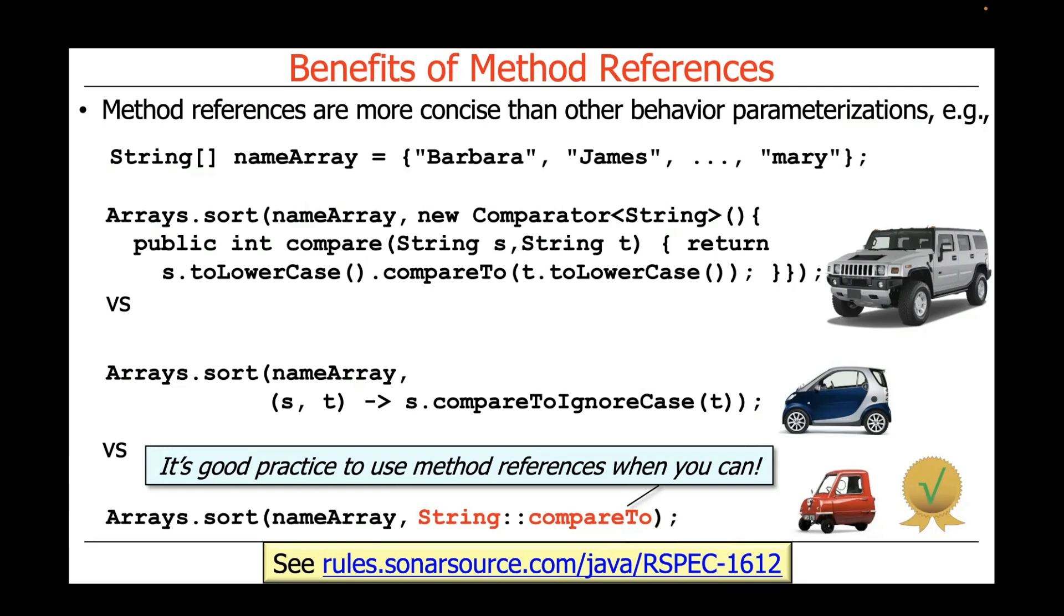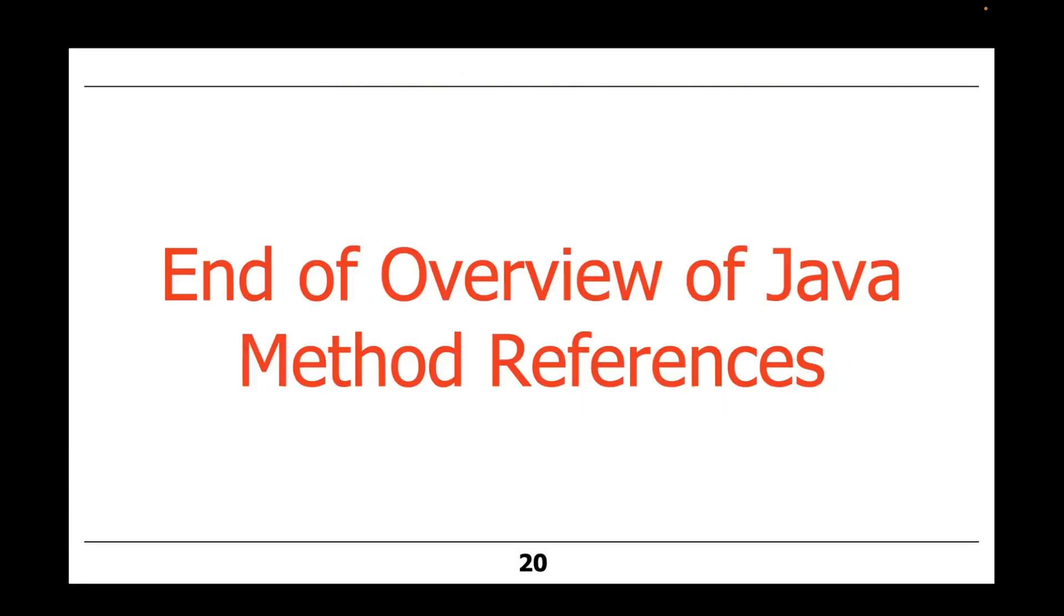They're often more readable, easier to plug and play than the corresponding Lambda expression, and certainly compared to the corresponding anonymous inner class. So that wraps up our overview of Java method references. And next we'll take a look at some examples in more detail.